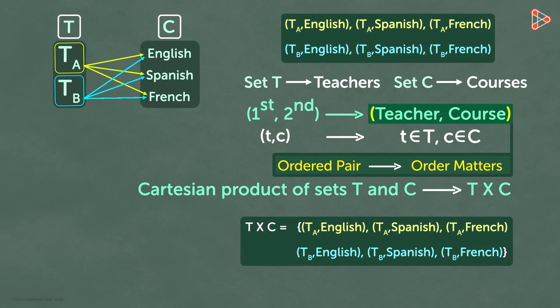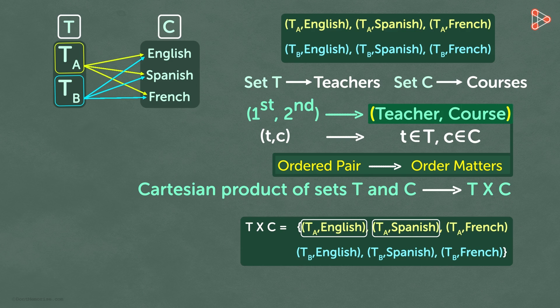T cross C is a set with the following elements written within curly brackets. This ordered pair is the first element. This pair is the second element, and so on.